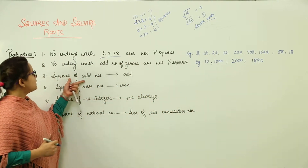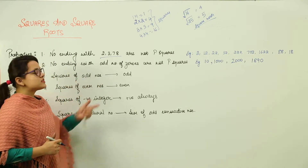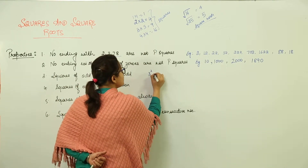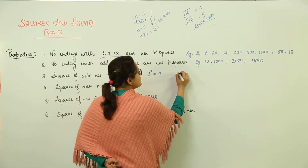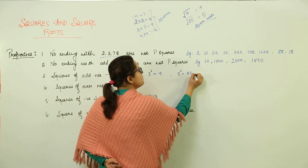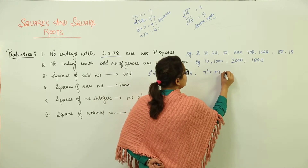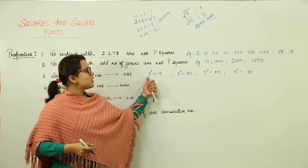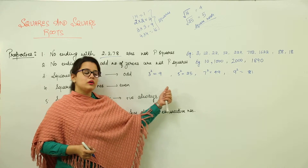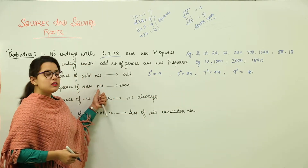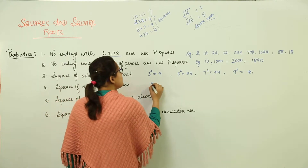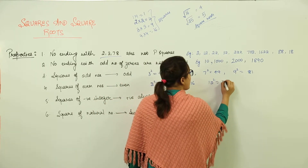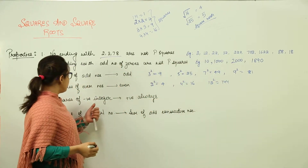The third property says that squares of odd numbers are always odd. We can verify: the square of 3 is 9, the square of 5 is 25, the square of 7 is 49, and the square of 9 is 81 — all odd. And squares of even numbers are always even. For example, 2 squared is 4, 4 squared is 16, and 12 squared is 144.